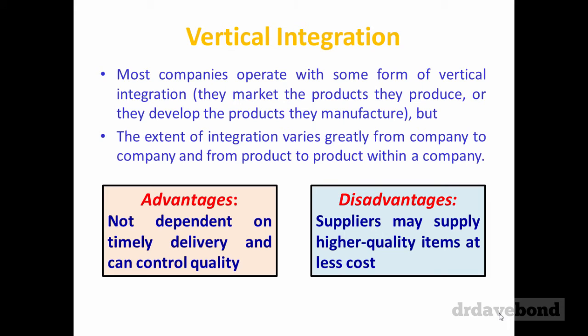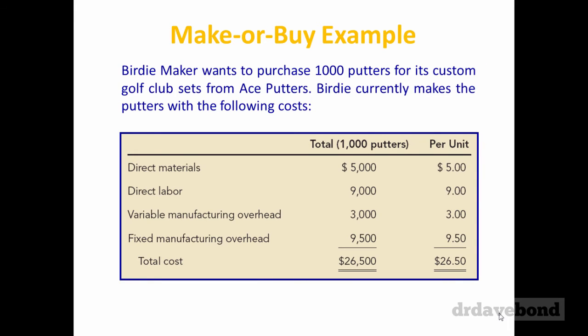Let's say a company wants to potentially outsource some of what they do. The case we have is a situation where they're making a product — in this case a golf club — internally. Direct material $5 a unit, $9 a unit, $3 a unit, fixed manufacturing $9.50 a unit. So to make this golf club it's costing Birdie Maker $26.50 per club. Now somebody's turned up and said they can sell it to you for $25 — which on the face of it looks cheaper than what they're making it for internally.